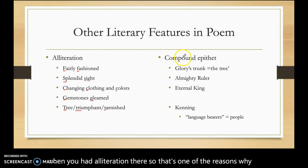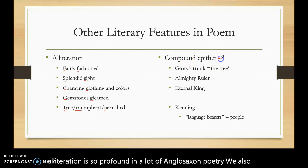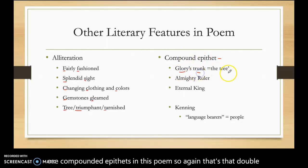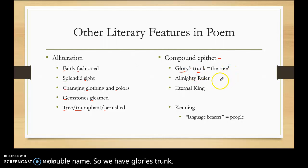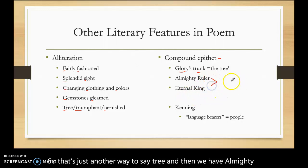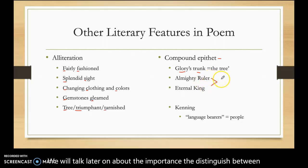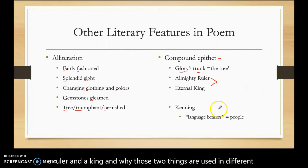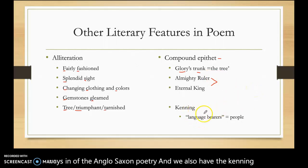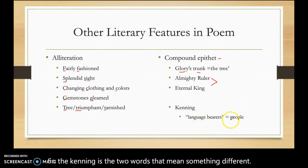We also see compounded epithets in this poem — that's the double name. We have 'Glory's trunk,' which is just another way to say tree. Then we have 'Almighty Ruler' and 'Eternal King,' which are representative of Jesus or God. We'll talk later about the importance of distinguishing between a ruler and a king and why those two things are used differently in some Anglo-Saxon poetry. We also have the kenning — two words that together mean something different. For example, 'language bearers' is another word for people.